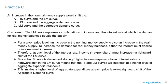For a given price level, an increase in the nominal money supply is also an increase in the real money supply. To increase the demand for real money balances, either the interest rate must decline or income must increase. Therefore, at each level of the interest rate, income must increase — a rightward shift of the LM curve. Since the IS curve is downward sloping, higher income requires a lower interest rate. A rightward shift in the LM curve means the IS and LM curves will intersect at a higher level of aggregate expenditure and income, implying a rightward shift of the aggregate demand curve.